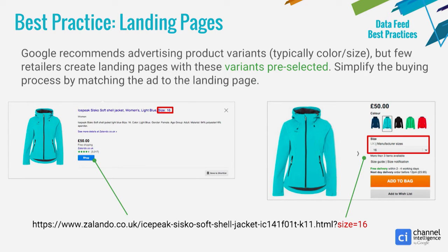A quick note on landing pages and your landing page URLs — something not a lot of retailers do. The fewer clicks it takes somebody to get from that first click to a conversion, the more likely they are to convert. A great way to reduce the number of clicks is to have your landing page URLs in your feed lead to a landing page with the color and size already pre-selected. It will also help you avoid people purchasing the wrong product — for example with an iPhone where it could be really difficult to tell from the picture whether it's silver or grey. If the landing page auto-selects the wrong color, you're going to have people returning products, which will cost you money.